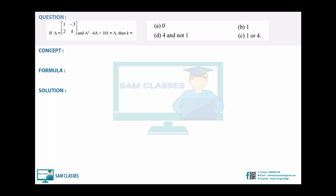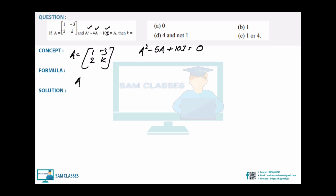Next question — a bit lengthy. We have matrix A = [[1,-3],[2,k]]. We need to find A² - 4A + 10I = 0 (I is the identity matrix). Rearranging: A² - 5A + 10I = 0.